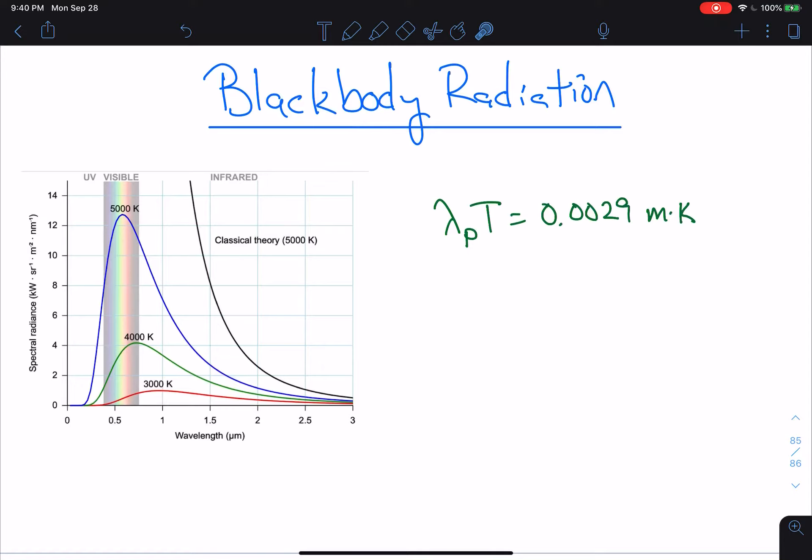So this formula here is called Wien's Law, and it says you take the peak wavelength times the temperature, and you get this value. Now, what is the peak wavelength? Well, look at this graph here, which I got from Wikipedia.